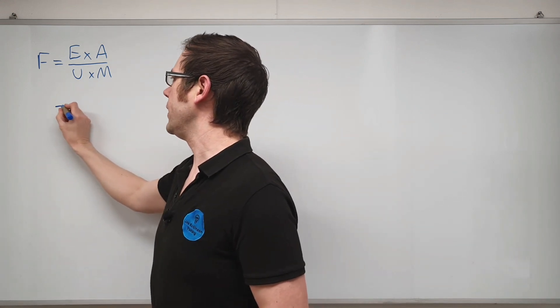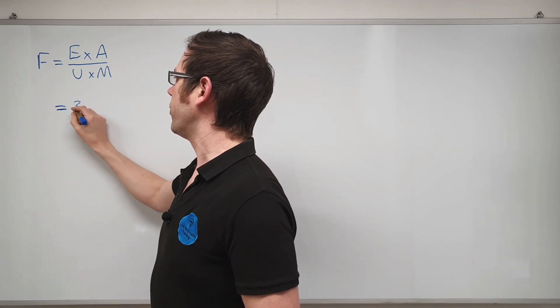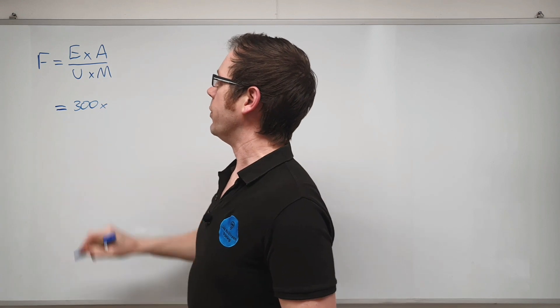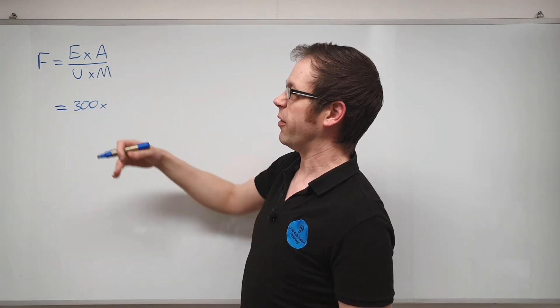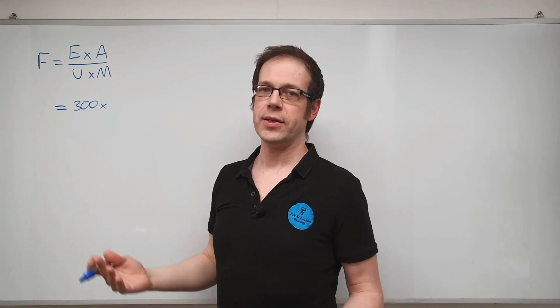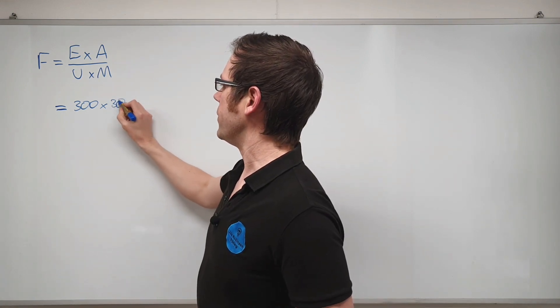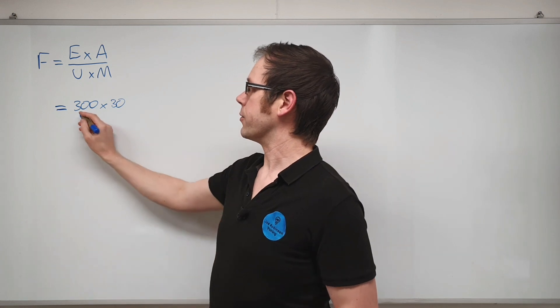Then we multiply that by the area of the room. Let's say the area is something like 5 meters by 6 meters, so we're going to say that is 30. We've got an area of 30 meters squared.